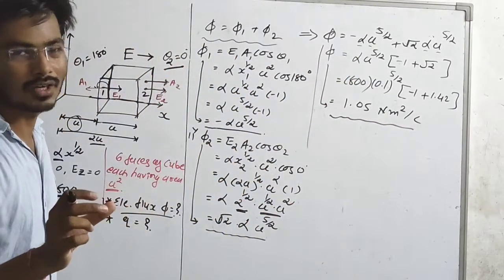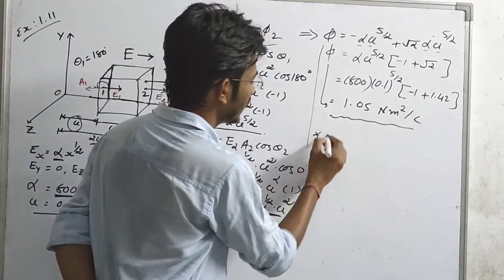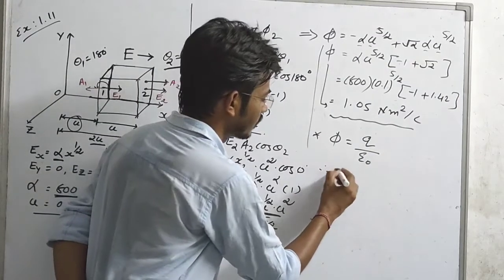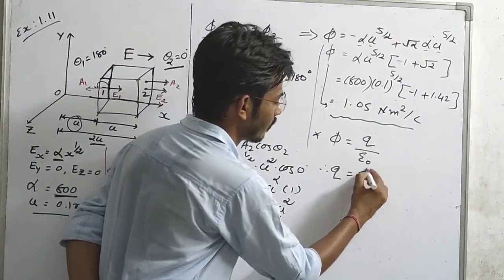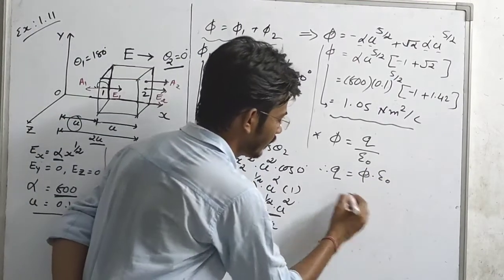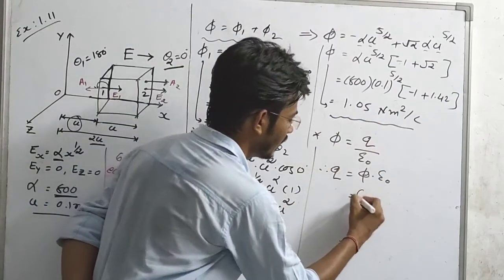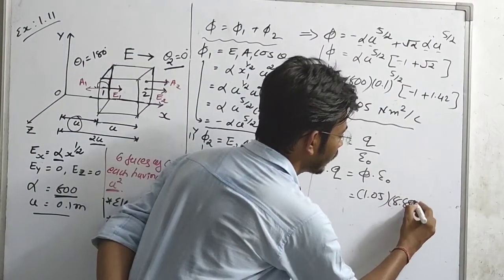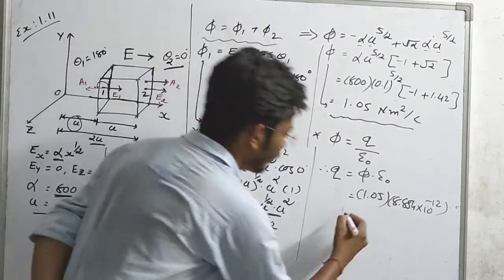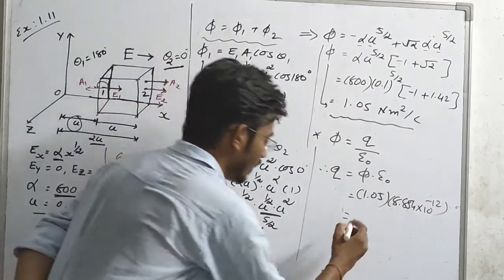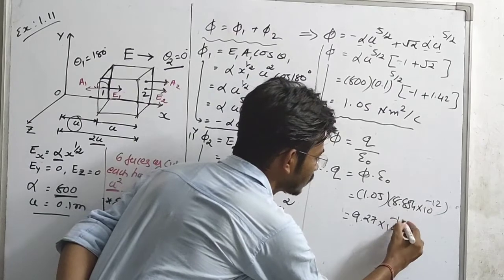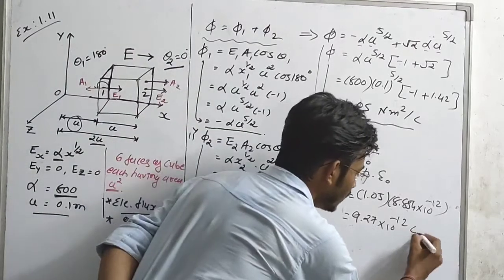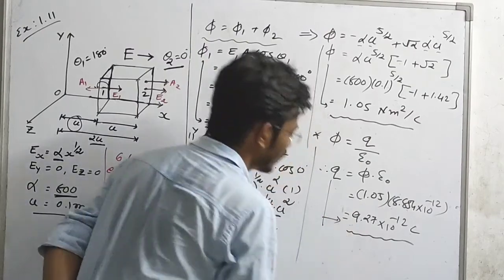For the second part, we have to find out the electric charge. As we know, phi equals electric charge Q divided by epsilon naught. Therefore, charge Q equals phi times epsilon naught. We already found flux phi equals 1.05. Epsilon naught equals 8.854 times 10 raised to minus 12. So Q equals 1.05 times 8.854 times 10 to the minus 12, which gives 9.27 times 10 raised to minus 12 Coulombs.